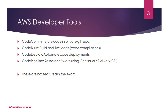The final one is CodePipeline. CodePipeline is for releasing software using continuous delivery, or a CD mechanism. It's a continuous delivery service for fast and reliable application updates — this is how you roll out application updates.